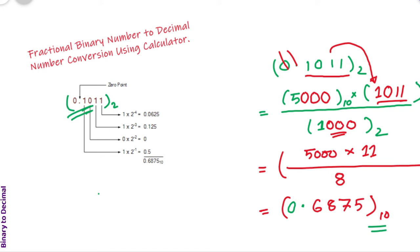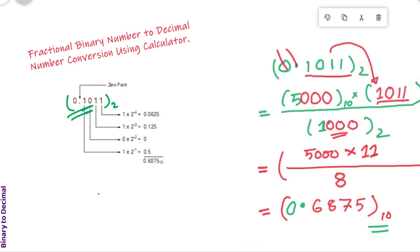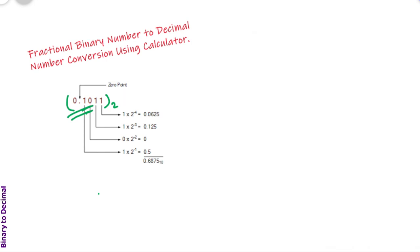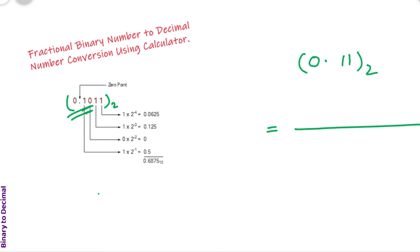I would like to share another fractional binary number for clarity. Let's say we have a binary number 0.11, and we want to convert this binary number into the corresponding decimal number.